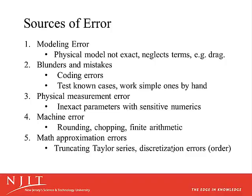Another source of error is blunders and mistakes. Often when we are using computers, we make coding errors. It's not always easy to find the coding errors, but in order to convince oneself that your code is good, some of the things that you can do are to test known cases with parameters for which you know the true values, or to work simple cases by hand and make sure that the computer is giving the same values. If we spend the time testing our code as best we can, we can have more confidence in the results that the computer code gives.